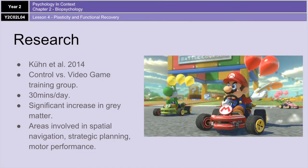Coon et al. in 2014 did research into plasticity, comparing a control group with a video game training group trained for two months for at least 30 minutes a day on Super Mario. They found a significant increase in gray matter in various brain areas including the cortex, hippocampus, and cerebellum — not evident in the control group. The researchers concluded that video game training had resulted in new synaptic connections in areas involved in spatial navigation, strategic planning, working memory, and motor performance — all skills important in playing the game successfully.